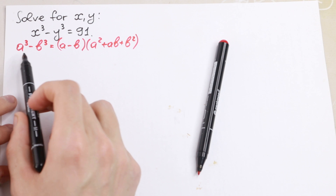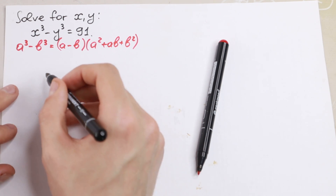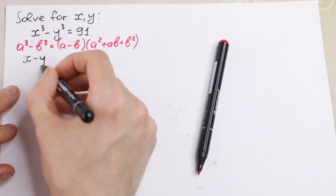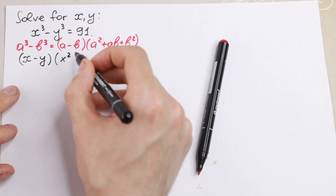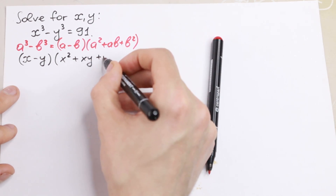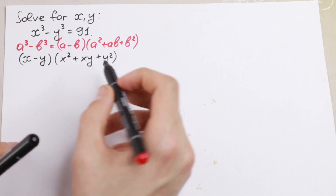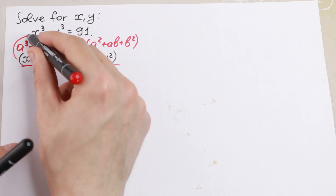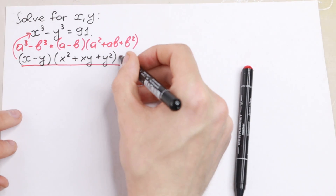Let's use this formula. Let's change a by x and b by y. We will have x minus y, times x² plus xy plus y². This is the same expression as in the beginning, equal to 91.